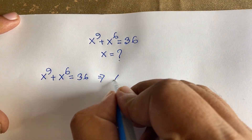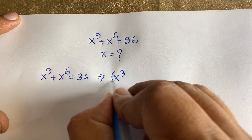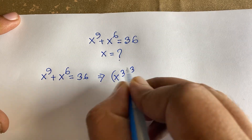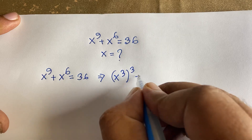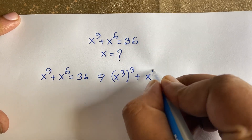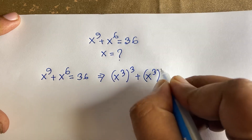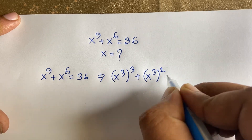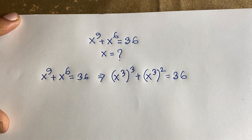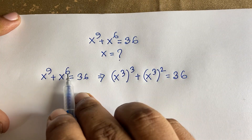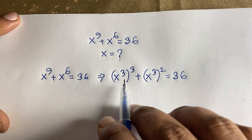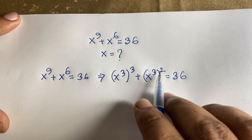I can rewrite x to the power 9 as x to the power 3, whole to the power 3 — because 3 times 3 equals 9. And x to the power 6 can be written as x to the power 3, whole to the power 2 — because 3 times 2 equals 6.